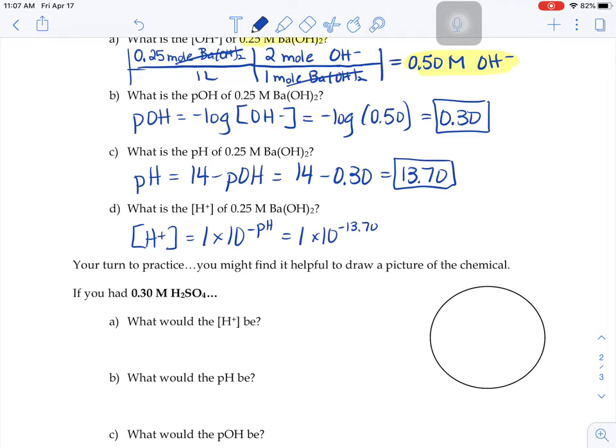Just negative 13.7. That's what we want, it's just not a properly written number. So we have to type that into our calculator, take it one extra step, and it turns it into 1.995 times 10 to the negative 14th M H plus.